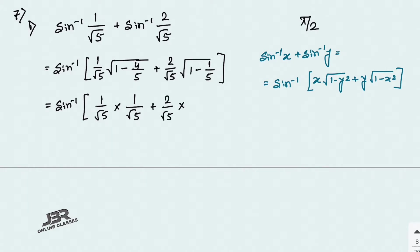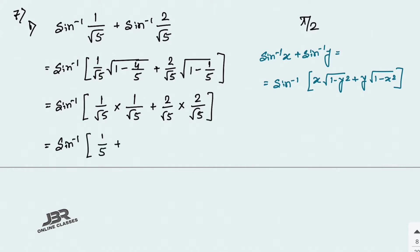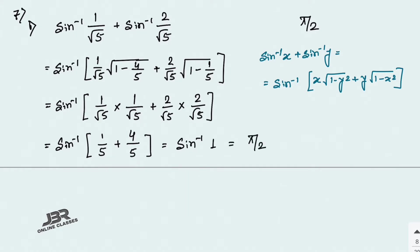For the second term: 2/√5 · √(4/5) — root of 4 is 2 and root of 5 remains, so 2/√5 · 2/√5 = 4/5. After addition we get sin⁻¹(1/5 + 4/5) = sin⁻¹(1). And sin⁻¹(1) = π/2 because sin(π/2) = 1. So the answer is π/2.